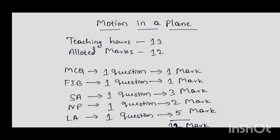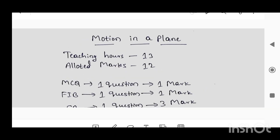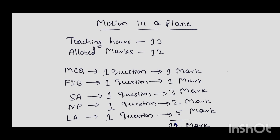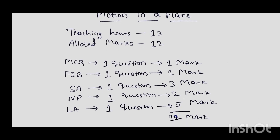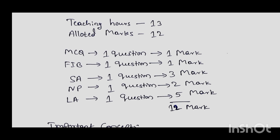Hi everyone, today I am going to discuss important concepts in motion in a plane. For this chapter, the total teaching hours is 13 and total allotted marks is 12. This 12 marks is distributed in various sections: one MCQ question carrying one mark, one FIB question carrying one mark, one short answer type question carrying three marks, one numerical problem carrying two marks, and one long answer type question carrying five marks — totaling 12 marks.